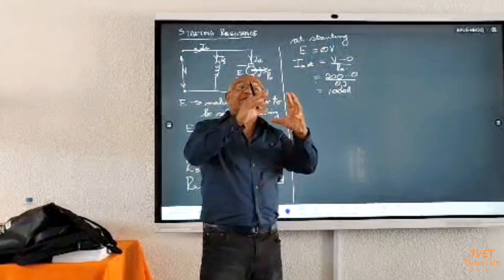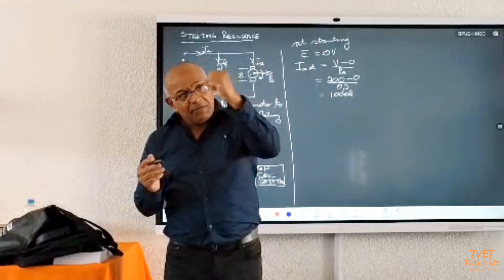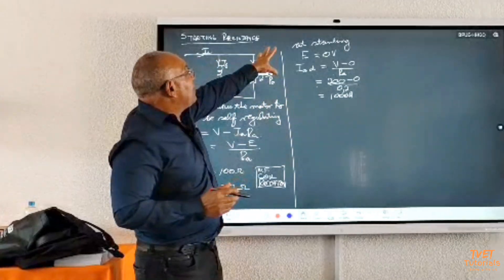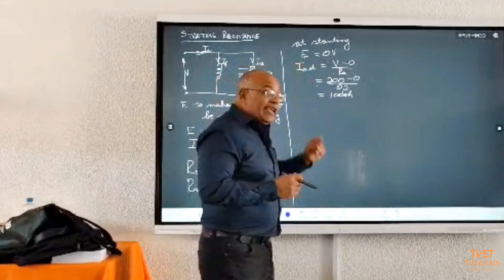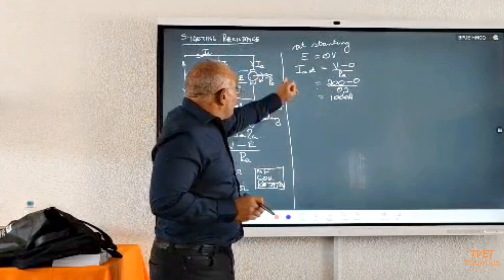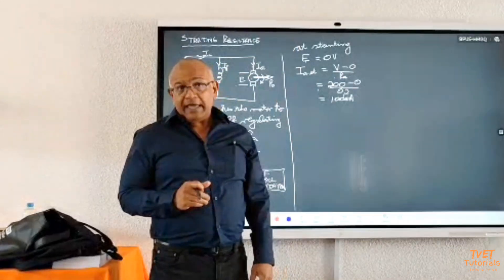But because the rotor is beginning to rotate, can you see the EMF is beginning to develop? As you exclude each resistance element, each time you move the arm, you exclude resistance from the armature, you will find automatically the EMF begins to grow. When we say it is self-regulated, it helps to limit the high starting current. That's the function.